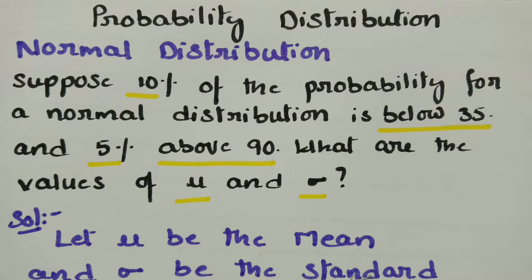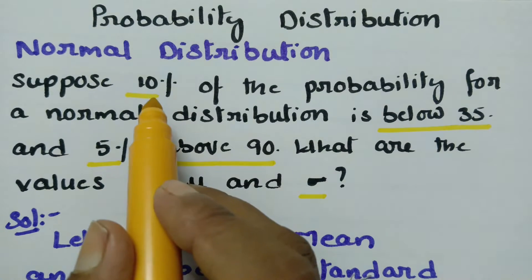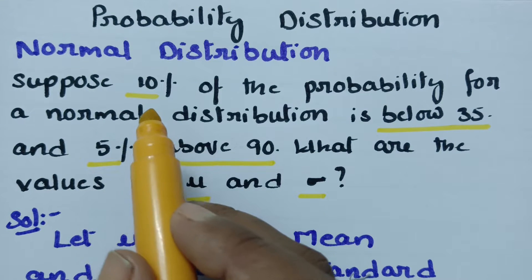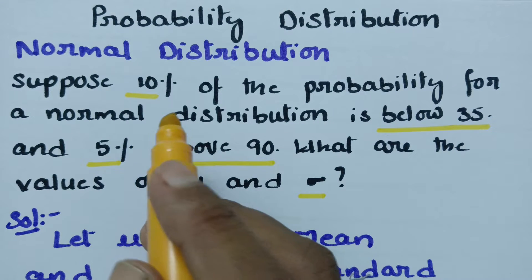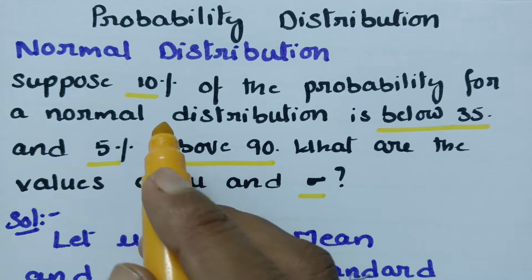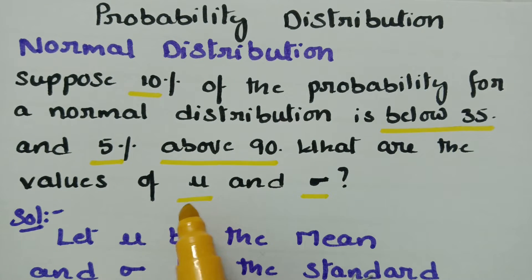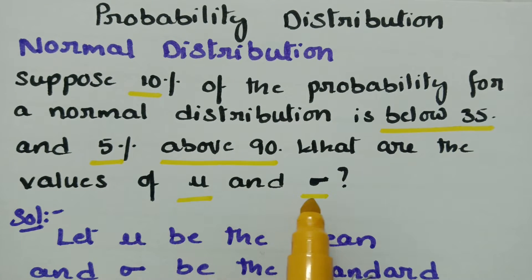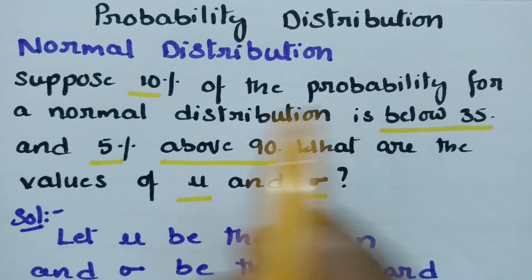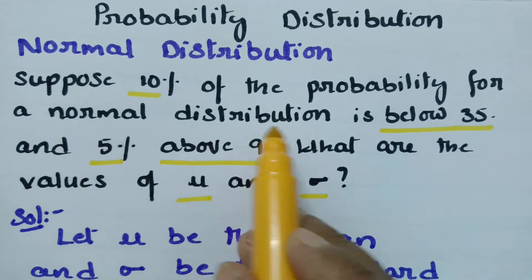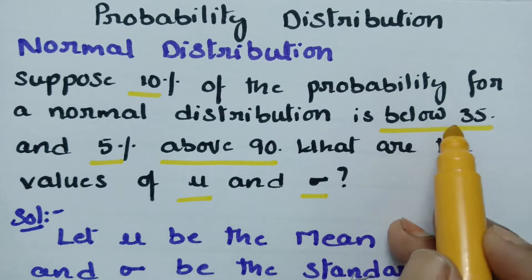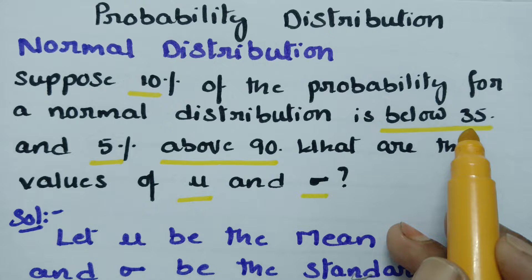It's very simple. The question is also very simple. If the percentage is given, it should be known that the probability is given and we have to find some variables. Here the variables are mu and sigma. Mu is the mean and sigma is the standard deviation.